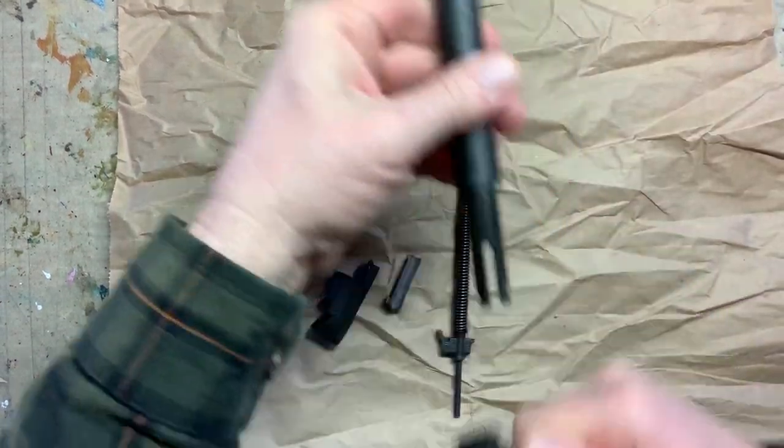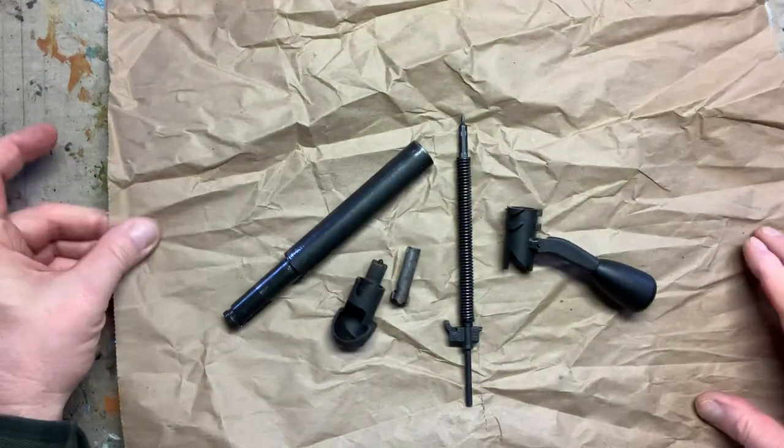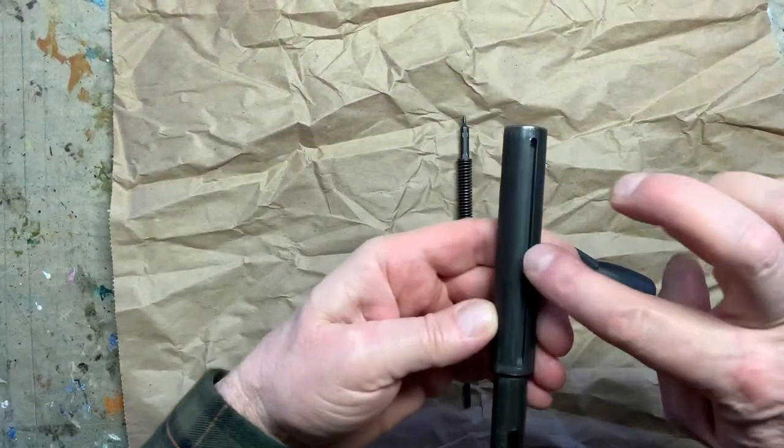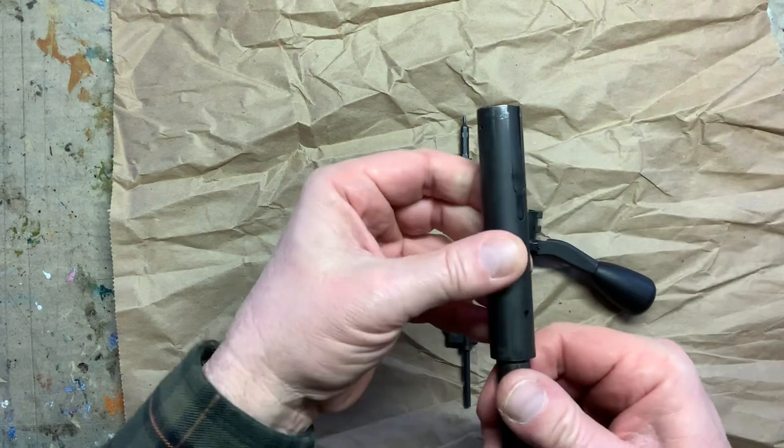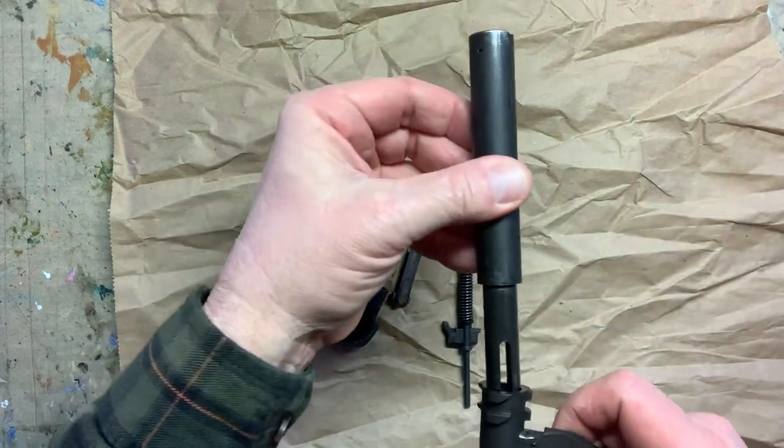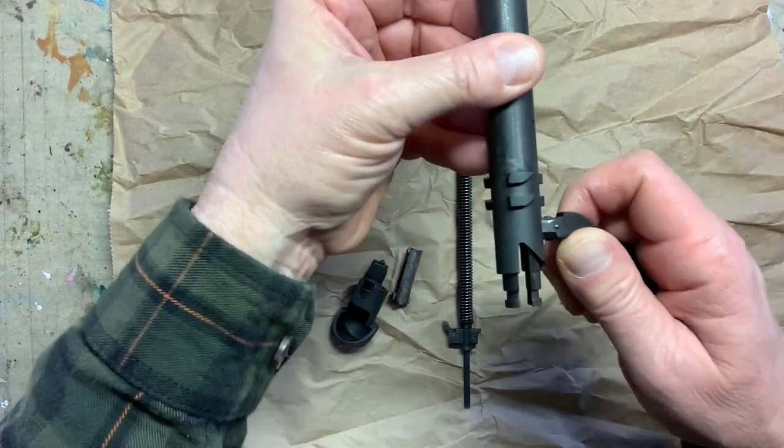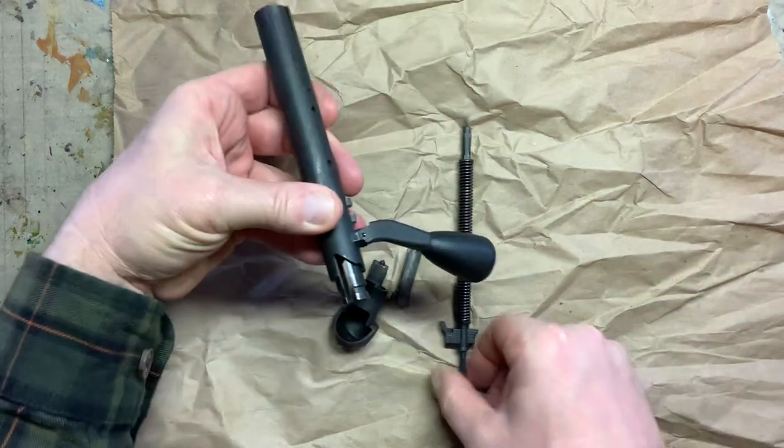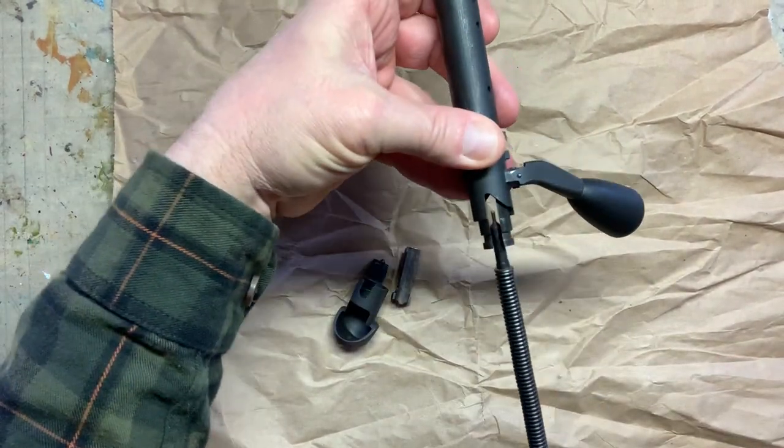Take the firing pin out. Okay, put it back together. You're going to keep this groove on the bottom. Take the bolt handle, put it back in, line up the notches. Take the firing pin, put it in. Keep the groove on the bottom. It'll only go together one way.